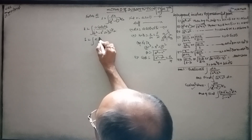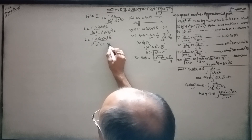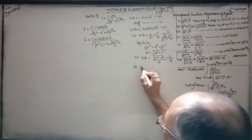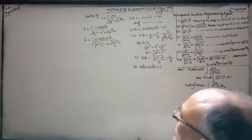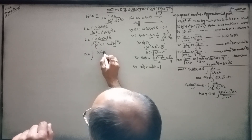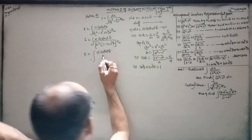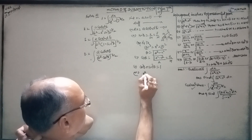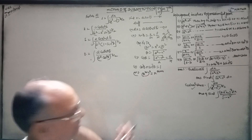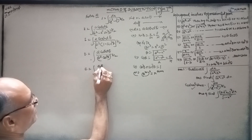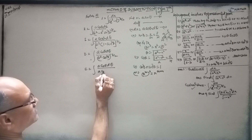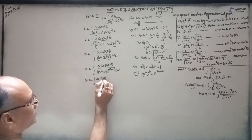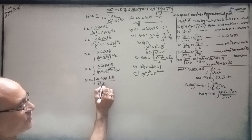Now I is equal to — when you take a² out, you get (1 − sin²(θ))^(3/2), which is cos²(θ)^(3/2), using the identity cos²(θ) + sin²(θ) = 1. So we get I equal to ∫a·cos(θ)·dθ over a³·cos³(θ).